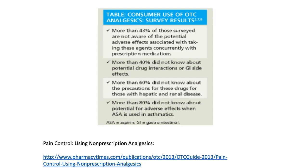Based on some studies, more than 43% of people surveyed who are taking OTC preparations for pain usually have other prescriptions as well. More than 40% did not know about potential drug interactions or GI side effects associated with pain treatment, and more than 60% did not know about precautions for those with hepatic or renal diseases.